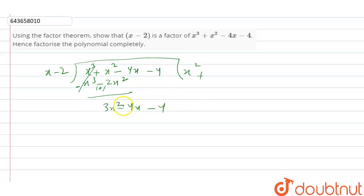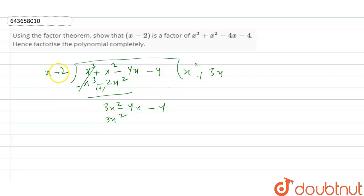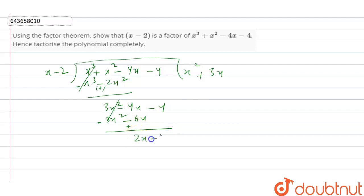Now we find what multiplies x to give 3x². That is 3x. So 3x times x gives 3x², and 3x times minus 2 gives minus 6x. Changing signs, this cancels, and we get 6x − 4x, which is 2x − 4.